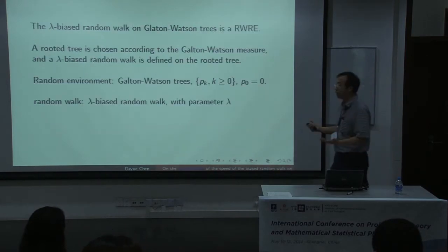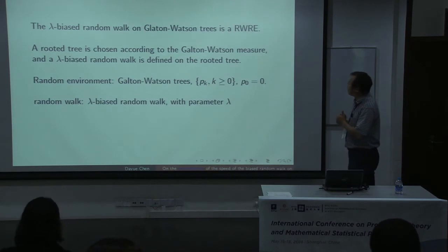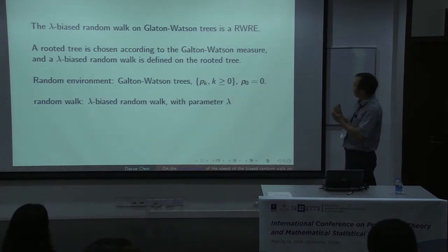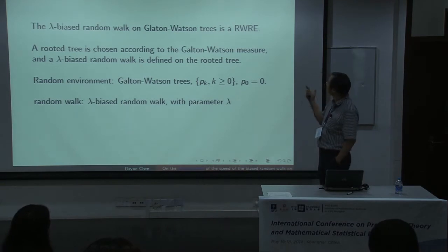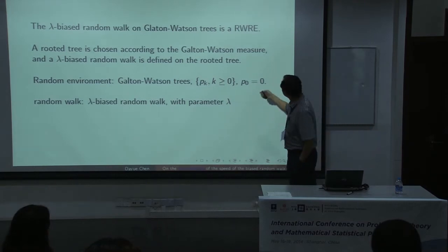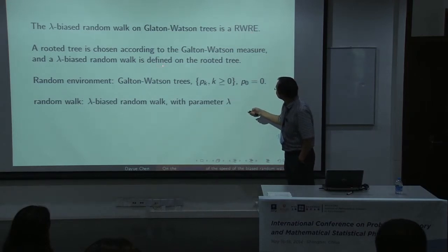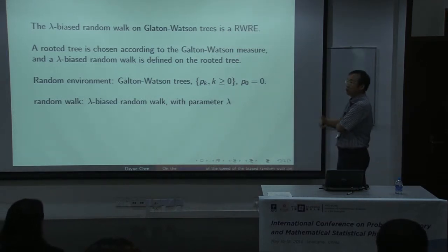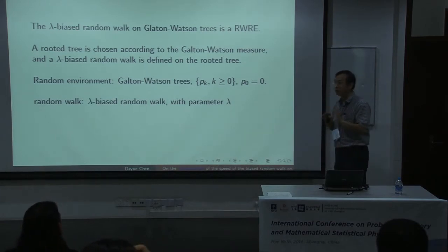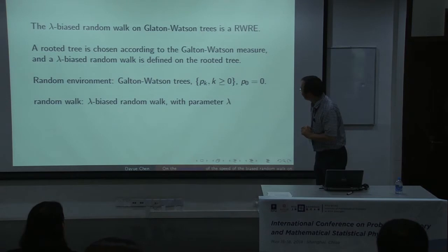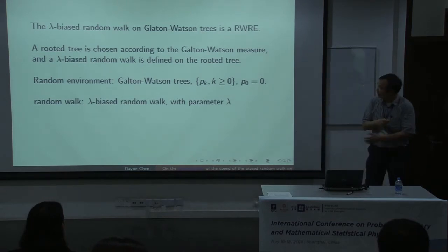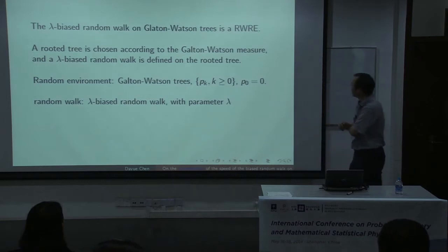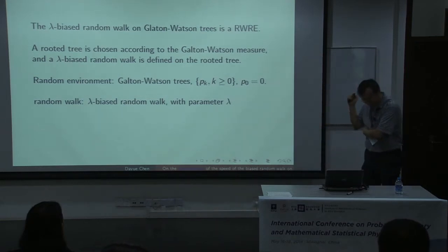We are talking about a random walk in a random environment: the Galton-Watson tree serves as the random environment, and the random walk is run on top of it. So we first pick the tree according to the Galton-Watson measure, and then run the walk with the environment fixed.